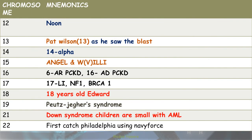Quick recap: Chromosome 12 — '12 NUN' for Noonan syndrome. Chromosome 13 — 'Pat Wilson as he saw the blast': Pat for Patau syndrome, Wilson for Wilson's disease, blast for retinoblastoma. Chromosome 14 — alpha-1 antitrypsin deficiency. Chromosome 15 — Angelman and Prader-Willi syndrome. Chromosome 16 — autosomal dominant PCKD.